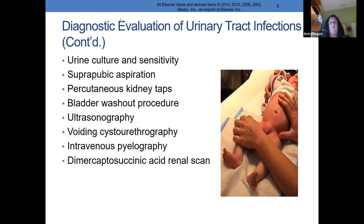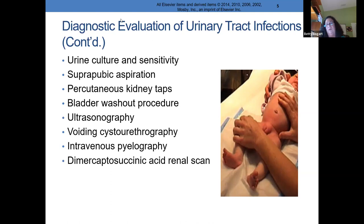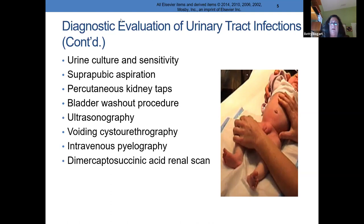Sometimes we do a percutaneous tap aspiration of the kidney itself. We'll put a catheter in on older children, put fluid in, take it out, and try to stir up any sludge or mucus to get a culture. We do ultrasounds to look for structural issues. We do voiding cystourethrography — called a VCUG — on children with frequent UTIs, looking for structural issues. We also do IVPs, intravenous pyelography, mostly looking for stones in older children, along with renal scans. Sometimes we have to do a renal biopsy to get a really clean urine from the kidney.